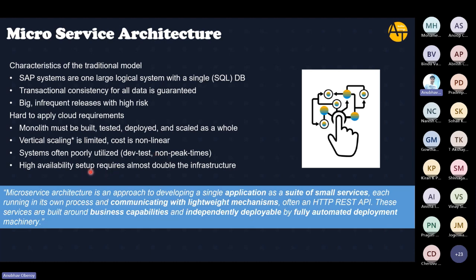High availability setup requires double infrastructure. Suppose you want a fail-safe mechanism — if one system goes down, you want another system to take over. For that, you need to double your infrastructure: buy more servers, more memory, more hard disk, more RAM, more motherboards. You have to almost double your investment to achieve high availability. These are the disadvantages of monolithic architecture in today's SAP systems.